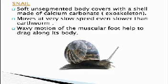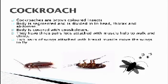Snail. The snail has a soft, unsegmented body covered with a shell made up of calcium carbonate. It moves at very slow speed, even slower than an earthworm. A wavy motion of the muscular foot helps drag its body along. Cockroach. Cockroaches are brown-colored insects. The body is segmented and divided into head, thorax, and abdomen. The body is covered with an exoskeleton. They have three pairs of legs attached with muscles that help them walk and climb, and two pairs of wings attached to the breast muscles that move the wings to fly.